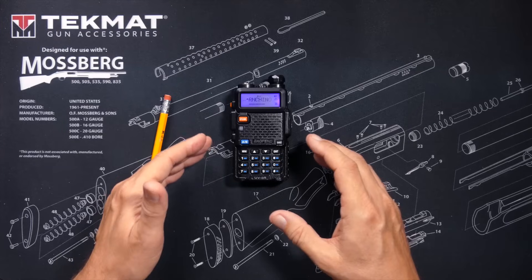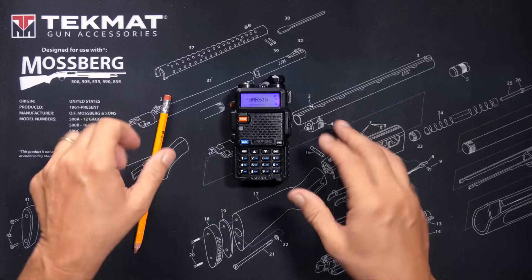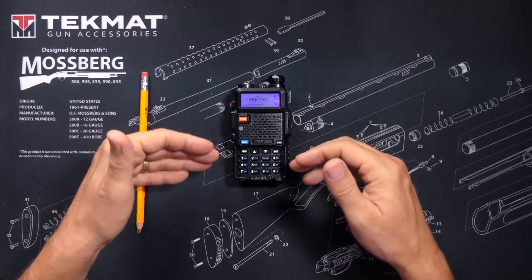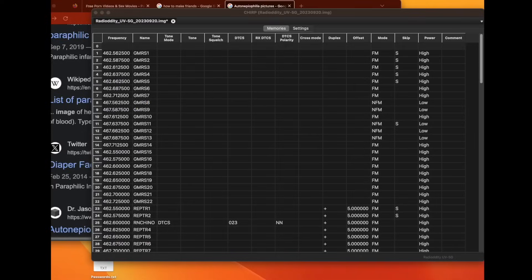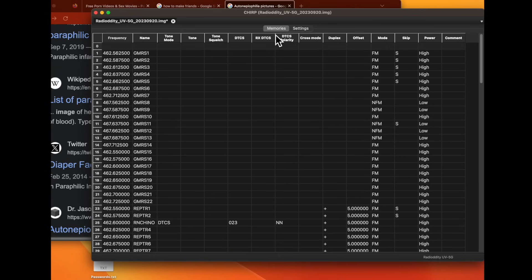While the radio is scanning, you cannot lock out or skip any channels on the keypad. It's just going to scan through all of your channels. However, if you have a computer and you use the Chirp software, you can program the radio to skip certain channels.